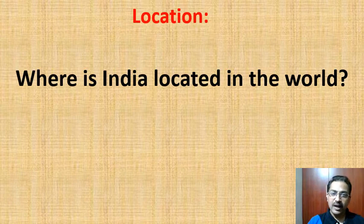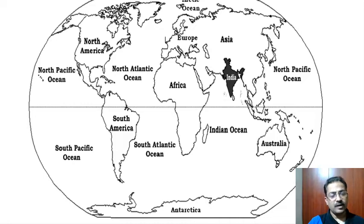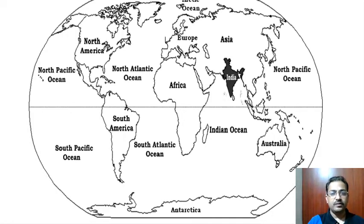Dear students, I show you the map. See — India is very clearly shown, shaded in black color. Can you tell me where India is situated? India is situated here, and this part is in the northeast. This is the northern hemisphere, and this is the northeastern hemisphere. India is at the center of the northeastern hemisphere.